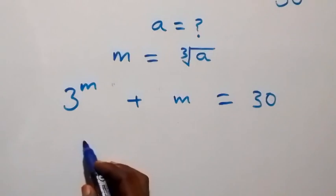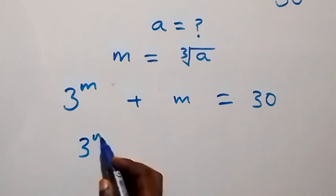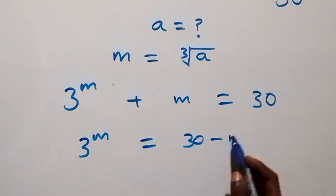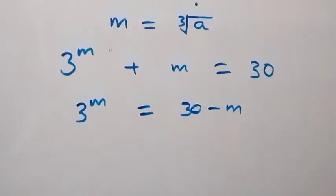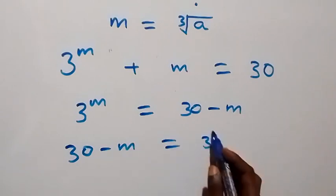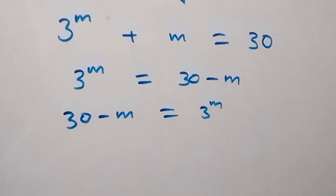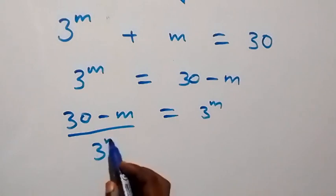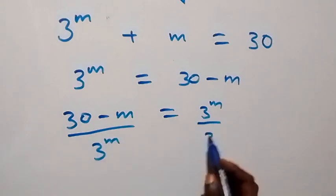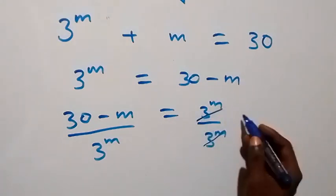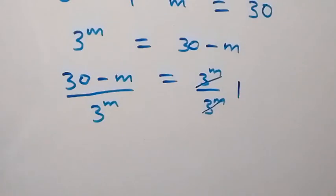From here, take m to the other side so we have 3 raised to power m equals 30 minus m, which is the same as 30 minus m equals 3 raised to power m. Next, we divide both sides by 3 raised to power m — these cancel each other and give us 1.